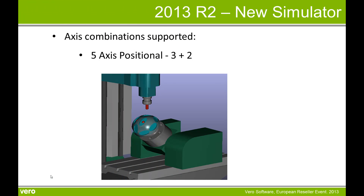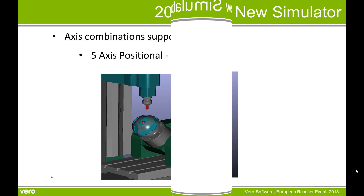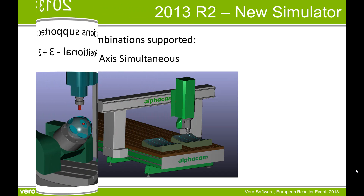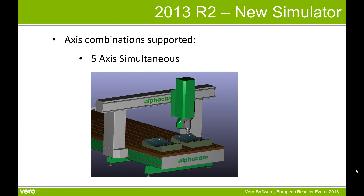We've already seen many combinations of 5 axis positional, 3 plus 2, and 5 axis simultaneous, as widely used within trimming.